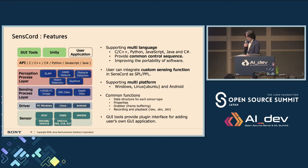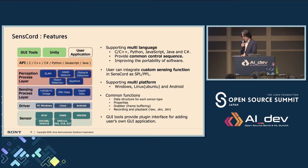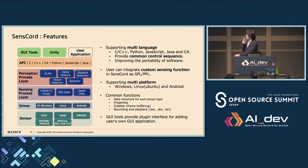The spec of SenseCode: it supports multiple languages including C, C++, Python, JavaScript, Java, and C#. Users can integrate custom sensing functions in SenseCode as SPL — Sensing Processing Layer — and PPL, which stands for Perception Processing Layer. It also supports multiple platforms including Windows, Linux, and Android. It is planned to be released as open source, but is not available today — it is currently in planning.